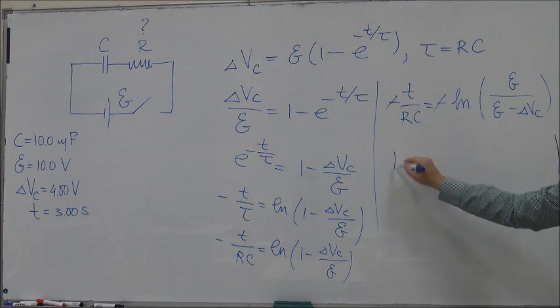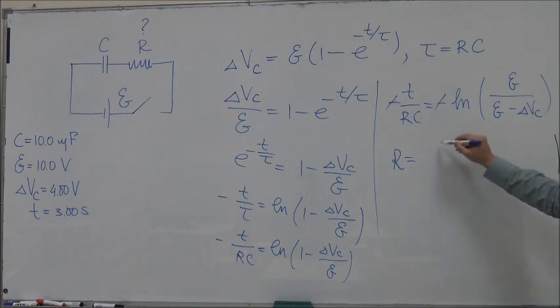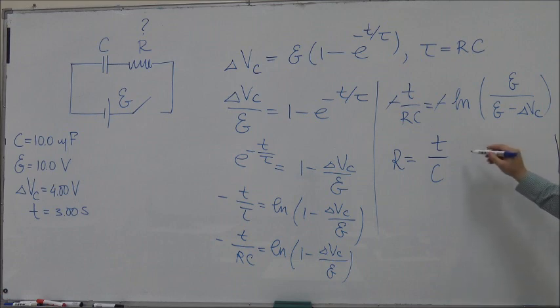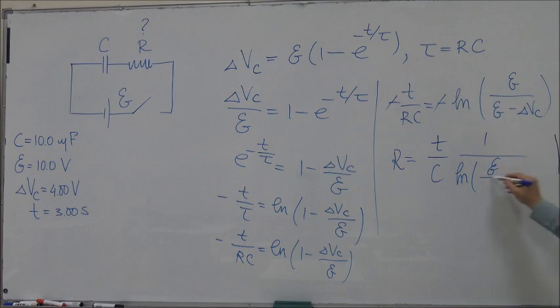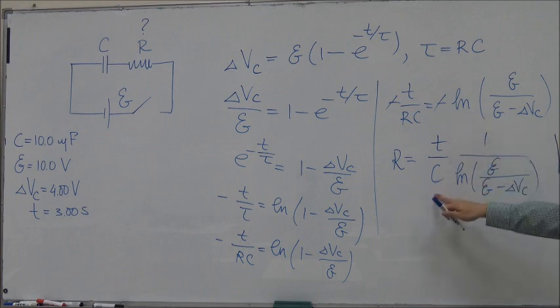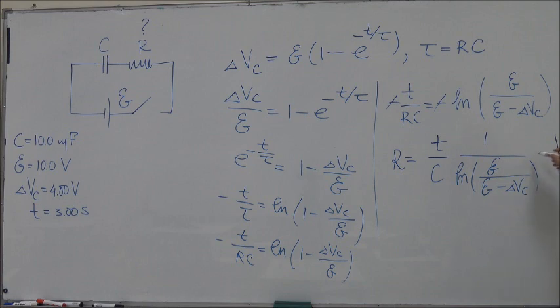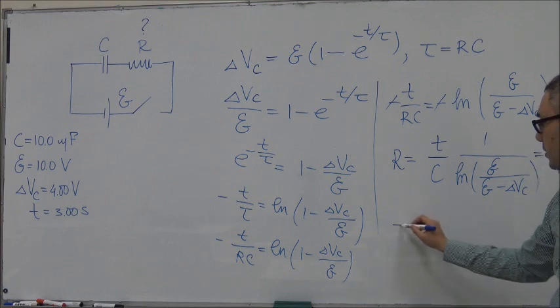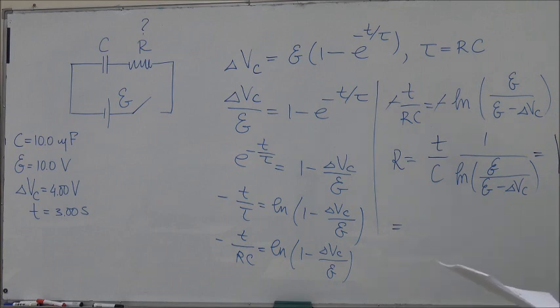So R therefore is equal to t/(C·ln(ε/(ε - ΔVc))). Now we know everything: we know time, we know capacitance, we know EMF and we know the voltage across the capacitor at time equals 3 seconds. So we just substitute everything in and we solve for R.